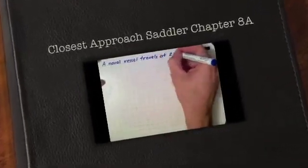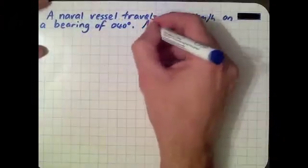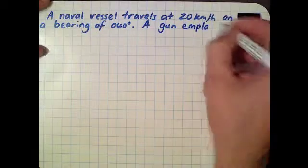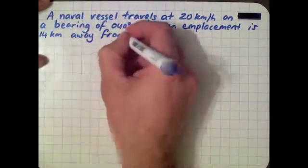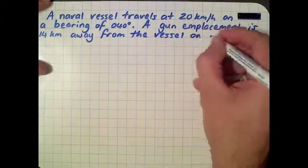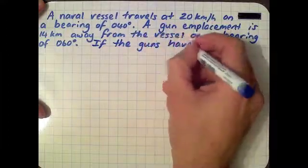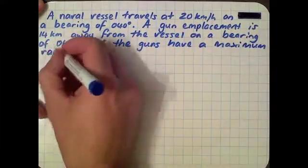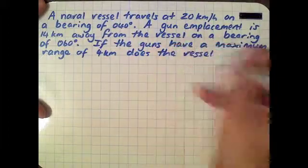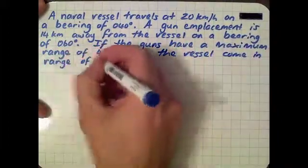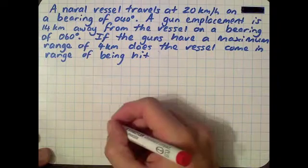We're going to have a look at the Saddler Textbook, particularly Chapter 8, where we're looking at the closest approach. He's got three examples that we're going to go through. The first one: we've got a naval vessel that travels at 20 kilometers per hour on a bearing of 0.4 degrees. There's a gun, probably on a hill, 14 kilometers away from the vessel on a bearing of 0.6 degrees. If the gun has a maximum range of 4 kilometers, does the vessel come in range of being hit?